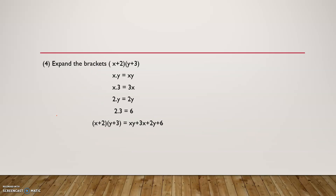Now expanding two brackets: (x plus 2)(y plus 3). We multiply each term: x times y equals xy, x times 3 is 3x, 2 times y is 2y, and 2 times 3 is 6. So x plus 2 times y plus 3 equals xy plus 3x plus 2y plus 6. This is our answer.